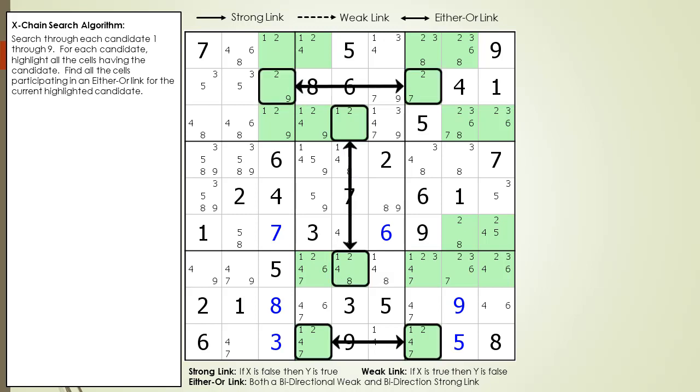In this example, we find three sets of either-or links now outlined. The first set is in the house making up row 2, the second is in the house making up row 9, and the third is in the house making up row 5. Since the X-Chain chaining sequence must begin and end with a strong link, each of these cells now outlined is a potential starting and ending cell in our chaining sequence.